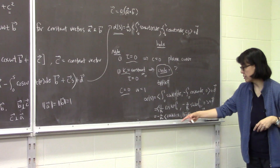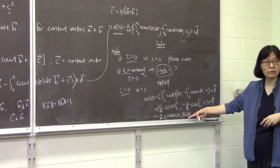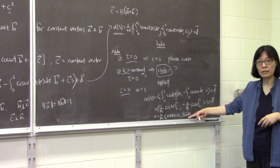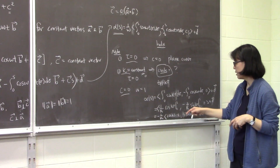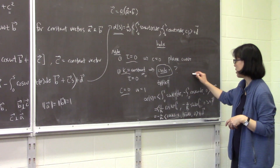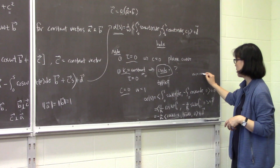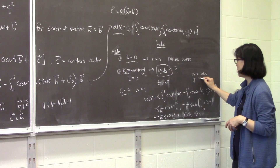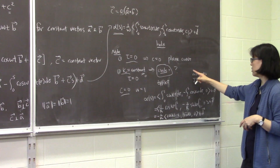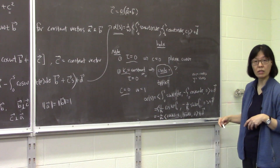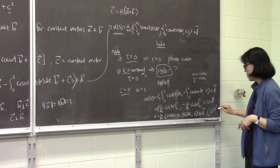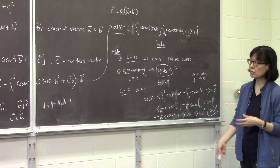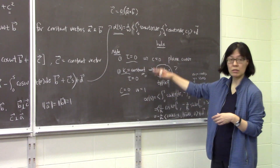So x is given by that, y is given by that. That is a circle. If you set x + 1 = cos(ks) and y = sin(ks), then (x+1)^2 + y^2 = 1. So it's a circle. From this example, we can see results like that.